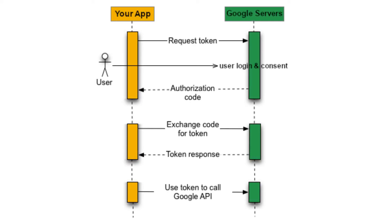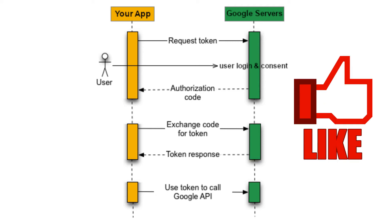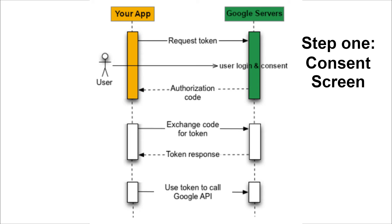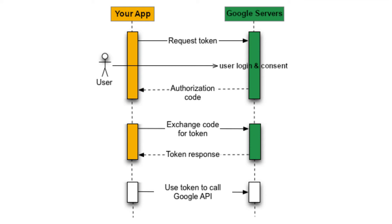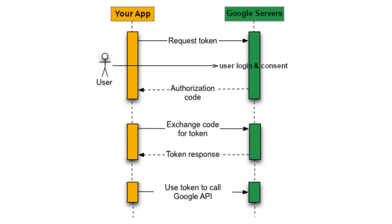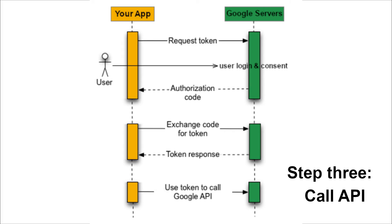I went ahead and color-coded Google's standard OAuth image here just to make things a little easier so that we can step through the image and I can explain how the image works and where each call comes into play. OAuth is actually split up into three different calls, technically four calls if you want to include refreshing the access token. So as a bonus, I'm going to show you how to refresh the access token at the end of this.